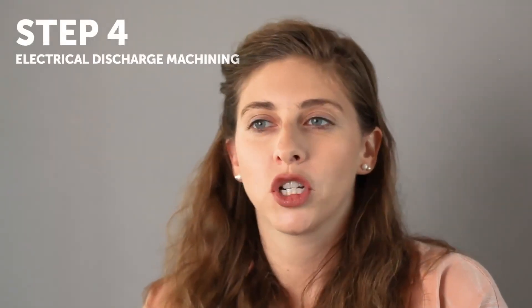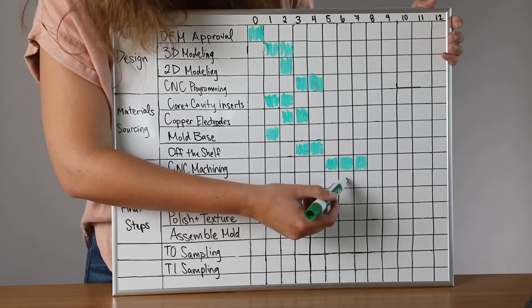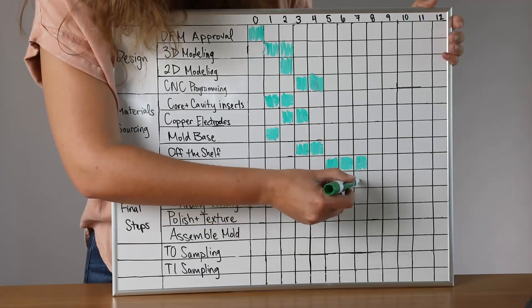Step four is electrical discharge machining, or EDM. First, wire EDM is used to make the final touches on small details in the mold. Then, sinker EDM is used to create fine details like text or complex internal features in the cavity, core, inserts, sliders, or lifters. The EDM process takes about three days to machine all the parts, but overlaps a little bit with the CNC machining timeline.